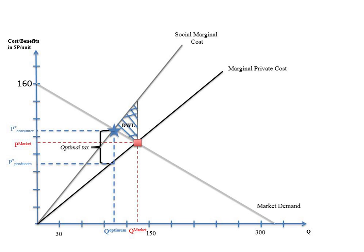Mathematically, this can be represented by marginal social cost equals marginal private cost plus marginal external costs.